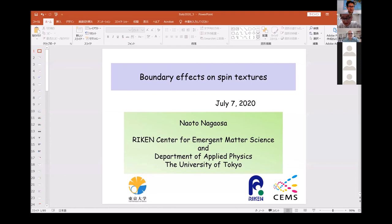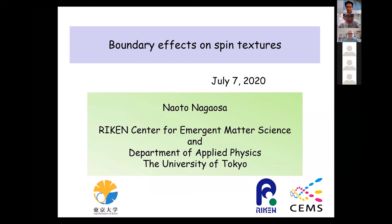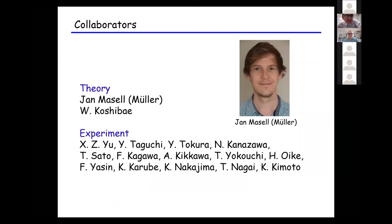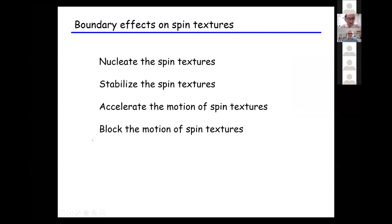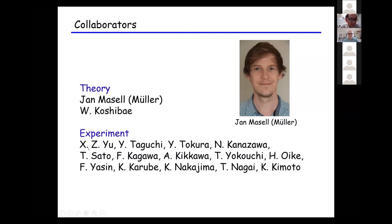Let me start by thanking the organizers, especially Joannik, and I need to apologize for the change of my title. I would like to talk about the boundary effects on the spin texture. Here is a list of collaborators, especially my friend in RIKEN, Jan Marcel, who was Dr. Miller previously but got married and changed his family name. Jan is the main player of this talk, and another theoretical colleague is Wataru Koshibai in RIKEN. I also have close collaboration with experimental people, especially Professor Yu — Wu-san is the most important figure in this work.